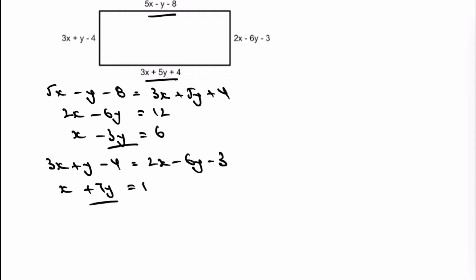And therefore, I've got now my two equations that I can use to work out the value of x and the value of y. Because I can write this as x plus 7y equals 1. And then I've got x minus 3y equals 6.